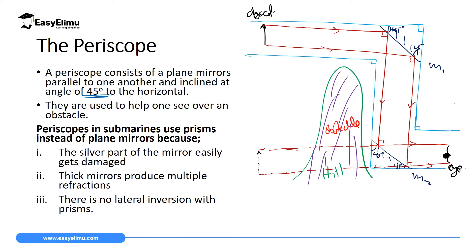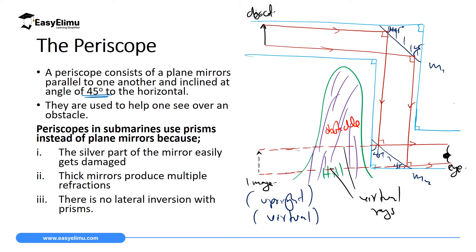The image formed by the periscope is the same size as the object. Also importantly, the image is upright — periscopes form upright images. Finally, the image is virtual, meaning it cannot be formed on a screen; the rays forming it are not real. These are called virtual rays.